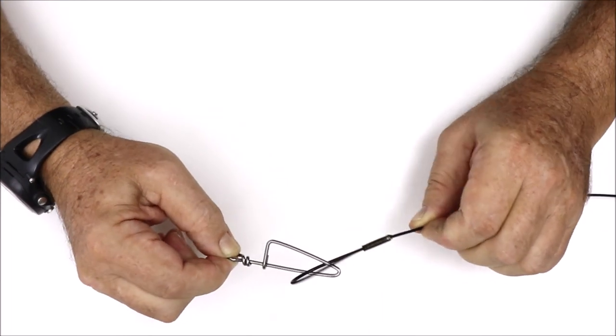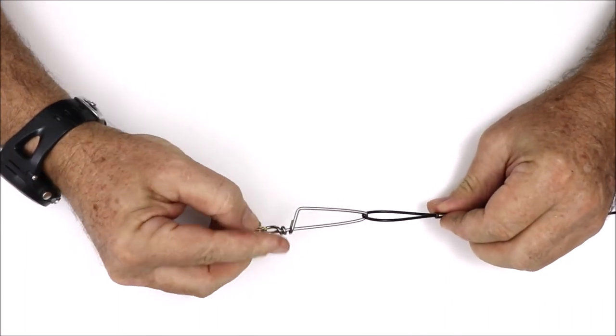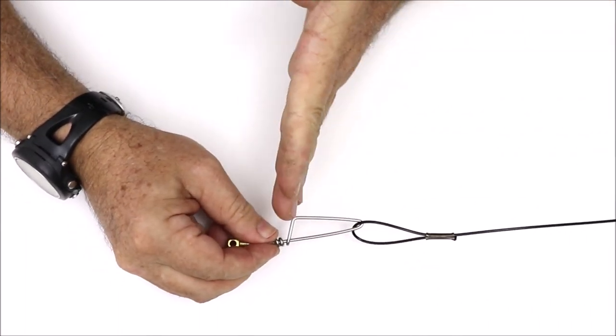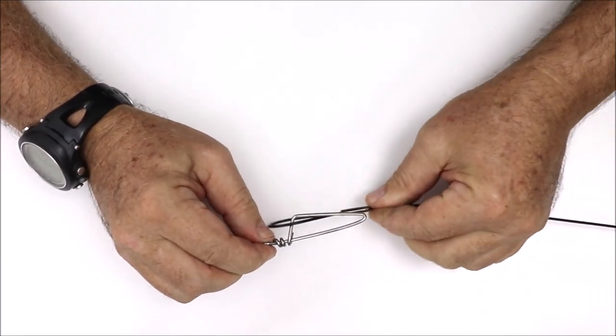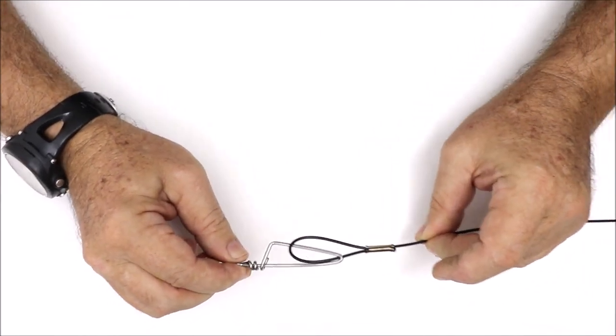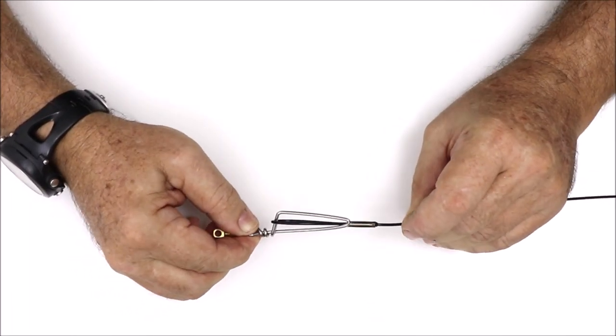The snap clip we make has an angled tag end, and as soon as the line hooks up there, soon as you put any tension, it pulls back. It cannot foul itself at the top. Very important on clips.